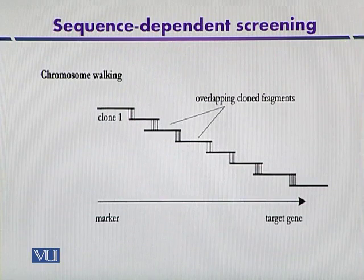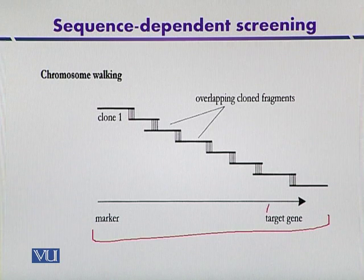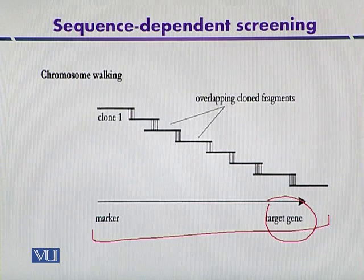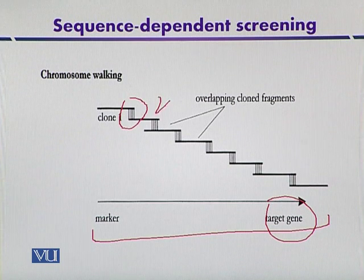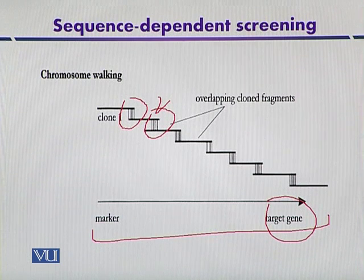This next diagram also illustrates chromosome walking, showing how we can detect overlapping DNA fragments. Suppose this is a DNA fragment and this is our target gene — this is the first clone that has overlapping ends with the next clone. The first clone is used to detect the second clone, which has overlapping ends with the next DNA fragment. In this way, each fragment is used as a probe to detect the next, allowing us to move along the whole length of the chromosome. This technique is called chromosome walking.